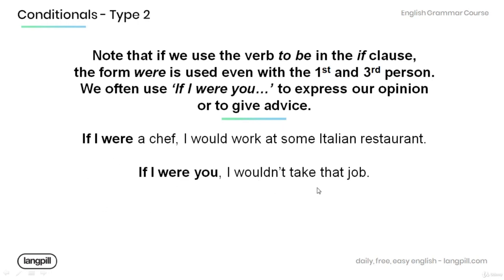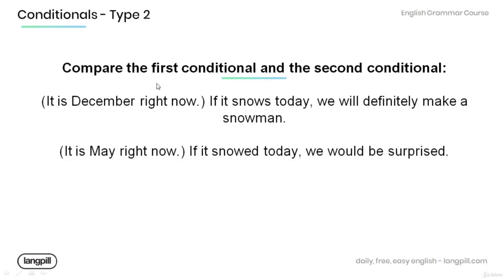Now, the first conditional and the second conditional. Have a look at the examples below. If it snows today, we will definitely make a snowman. This sentence is in the first conditional because it is December right now and it's highly likely for it to snow.